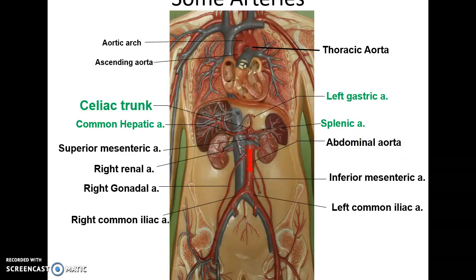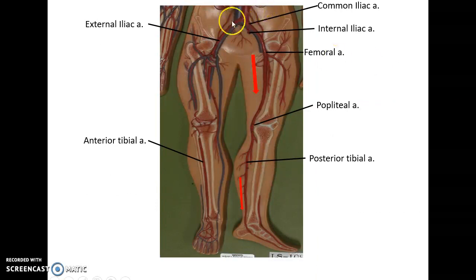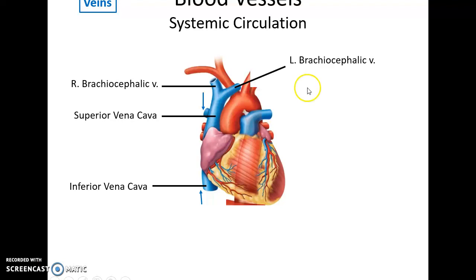The thoracic aorta descends into the abdominal cavity, becoming the abdominal aorta. The abdominal aorta splits into many arteries including the celiac trunk — which splits into the left gastric artery, splenic artery, and common hepatic artery — plus the right and left renal arteries, the superior and inferior mesenteric arteries to the intestines, and the right and left gonadal arteries. At its inferior end, the abdominal aorta splits into the right and left common iliac arteries, which divide into the external and internal iliac arteries. The external iliac becomes the femoral artery, then the popliteal artery, then the posterior and anterior tibial arteries.